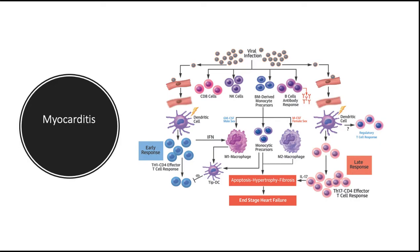Viral infections are the most common cause of myocarditis, with Coxsackievirus A and B and other enteroviruses accounting for the majority of cases. Cytomegalovirus, human immunodeficiency virus, influenza virus and others are less common pathogens. Offending agents can be identified by serologic studies showing rising antibody titers or through molecular diagnostic techniques. While some viruses can cause direct cell death, in most cases the injury results from an immune response directed against virally infected cells, analogous to damage inflicted by virus-specific T cells on hepatitis virus-infected liver cells.